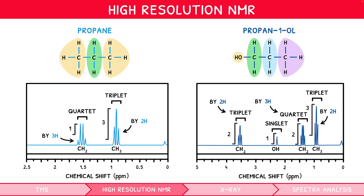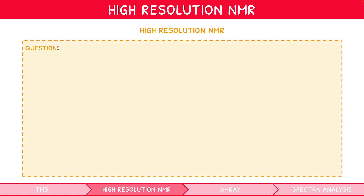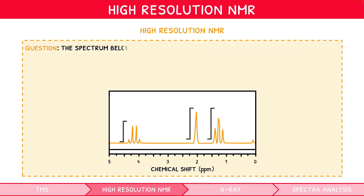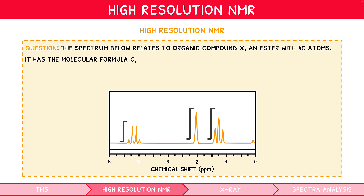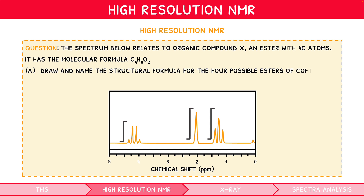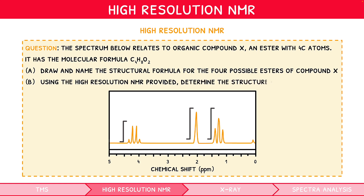You now have full knowledge of NMR spectra as required for your exam. Let's apply our skills with an example question. The spectrum below relates to organic compound X, an ester with four carbon atoms. It has the molecular formula C₄H₈O₂. Part a: draw and name the structural formula for the four possible esters of compound X. Part b: using the high-resolution NMR spectrum provided, determine the structure of X.